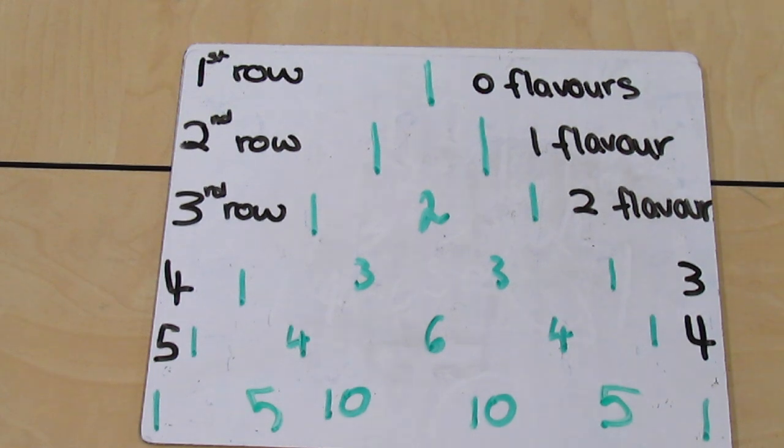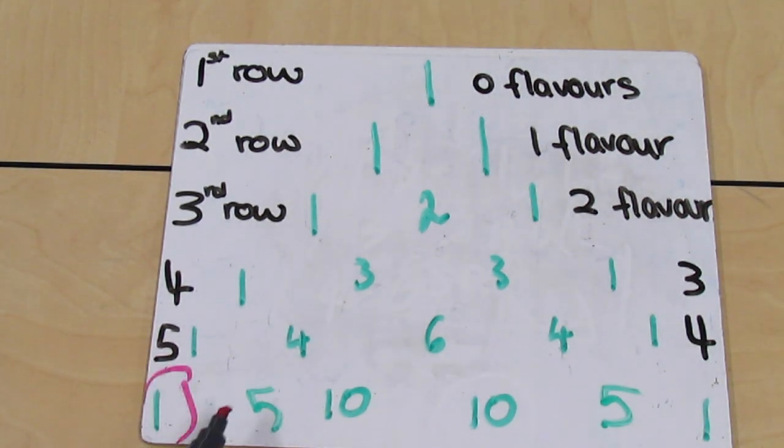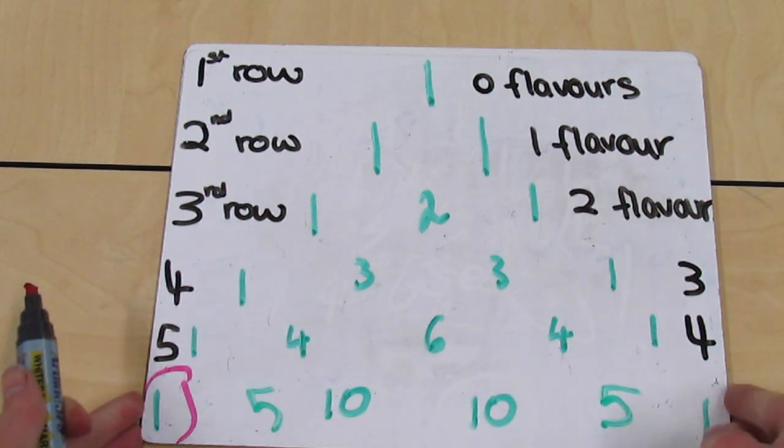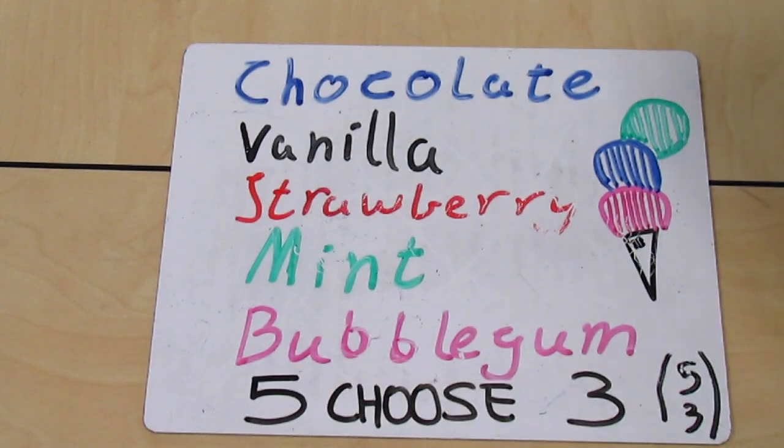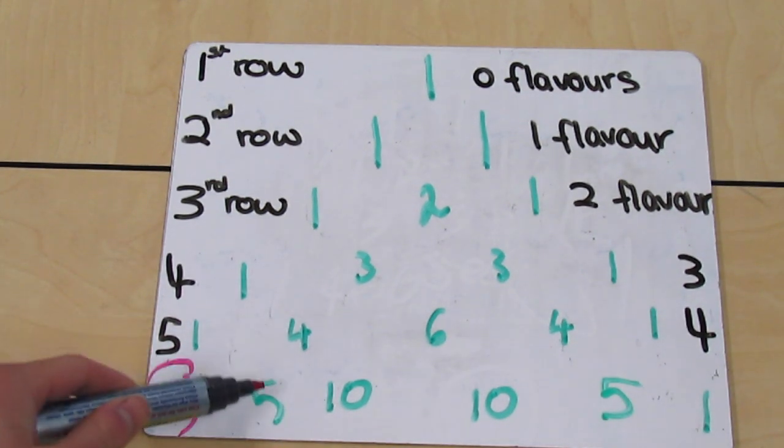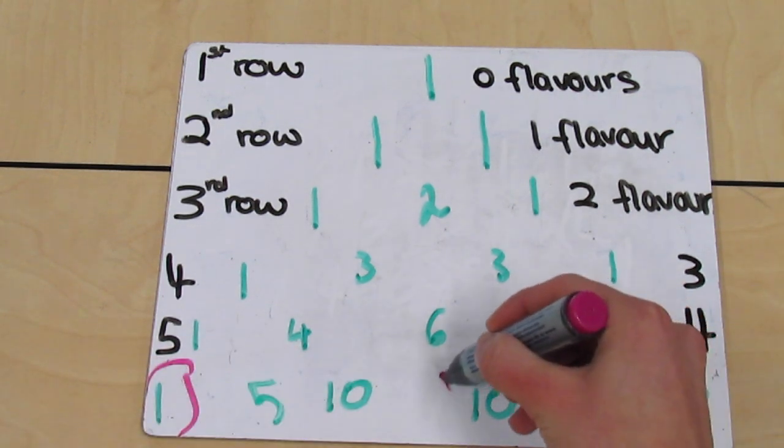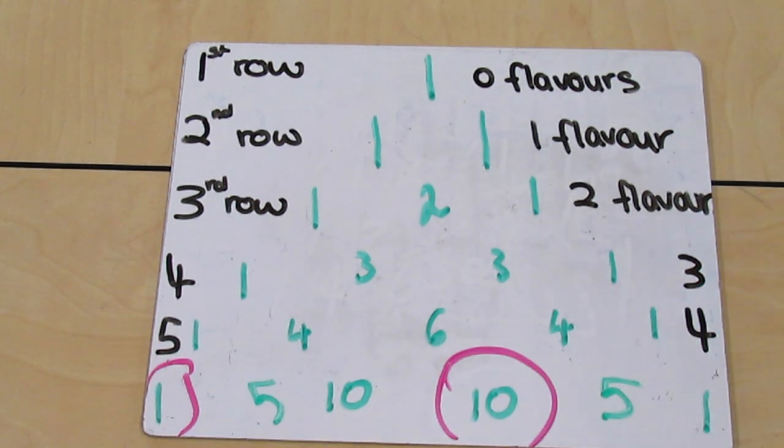So the same thing goes along the bottom here. If you were to choose zero, there would only be one way. Therefore, to choose one would be five, which makes sense. It would be chocolate, vanilla, strawberry, mint, and bubblegum. So zero, one, two, three ways. Therefore, to choose three, you would have ten different combinations.